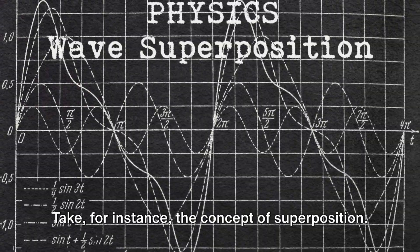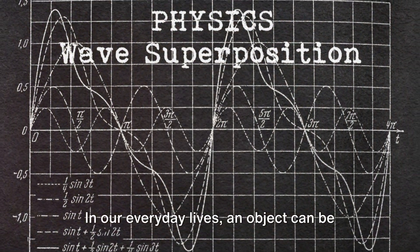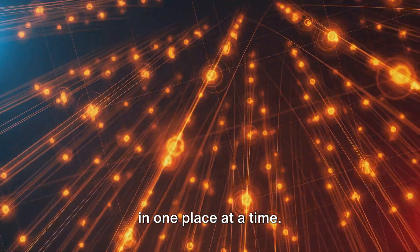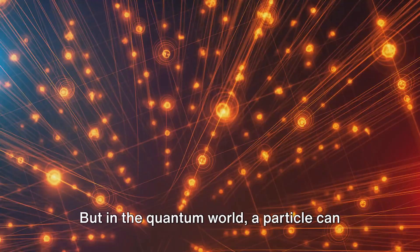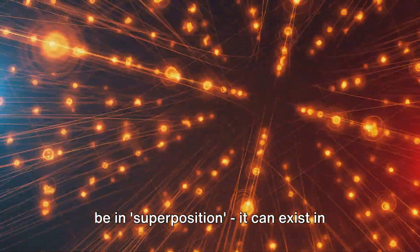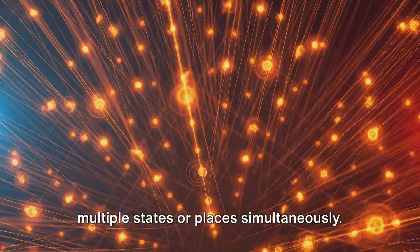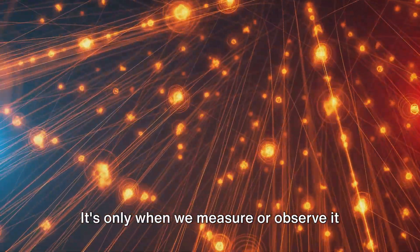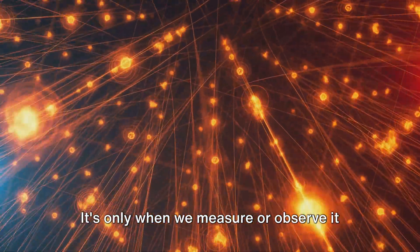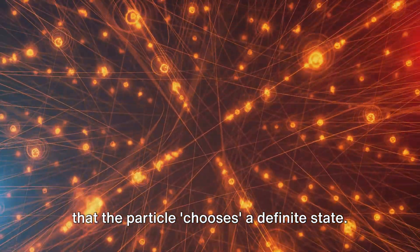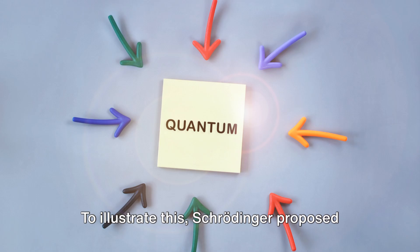Take, for instance, the concept of superposition. In our everyday lives, an object can be in one place at a time. But in the quantum world, a particle can be in superposition. It can exist in multiple states or places simultaneously. It's only when we measure or observe it that the particle chooses a definite state. To illustrate this, Schrödinger proposed a thought experiment now famously known as Schrödinger's cat.